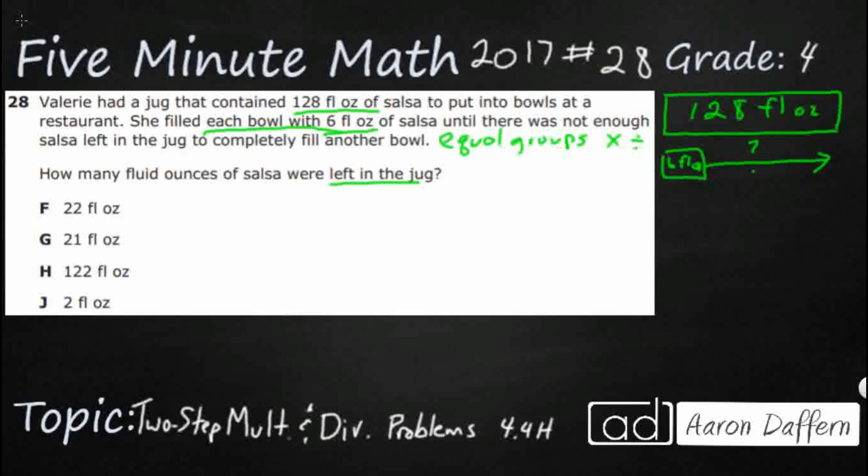So that lets me know that I can either multiply six times my unknown equals 128. I know my sixes, but I don't know them up that high. Probably the better way to do it would be to go ahead and make it a division problem. 128 divided by six. That is going to give me my unknown.